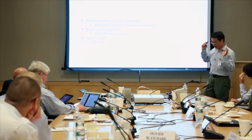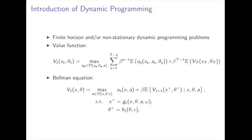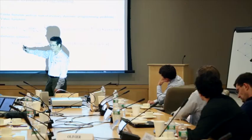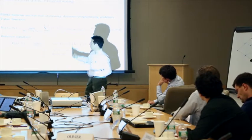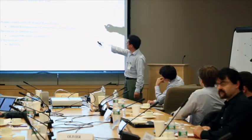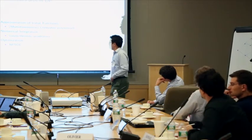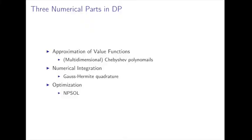There are three major parts in this dynamic programming. The first is approximation. When we do it, we know the value function at t+1 and need to compute the value function at t. But this is a continuous function, so we cannot represent it completely — we have to use a proper approximation. We usually use Chebyshev polynomials in our papers. The second part is numerical integration.